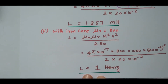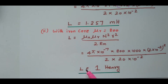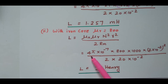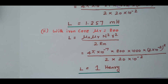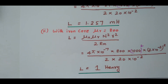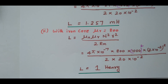For the second condition — with iron core, μr equals 800 — the inductance formula is the same: L equals μ₀ μr N squared r squared divided by 2Rm. Substituting μ₀ = 4π×10⁻⁷, μr = 800, N = 1000 squared, r = 2×10⁻² squared, divided by 2 times 20×10⁻² — after simplifying, L equals nearly 1 henry. So we got the inductance values for air core and iron core with μr = 800.